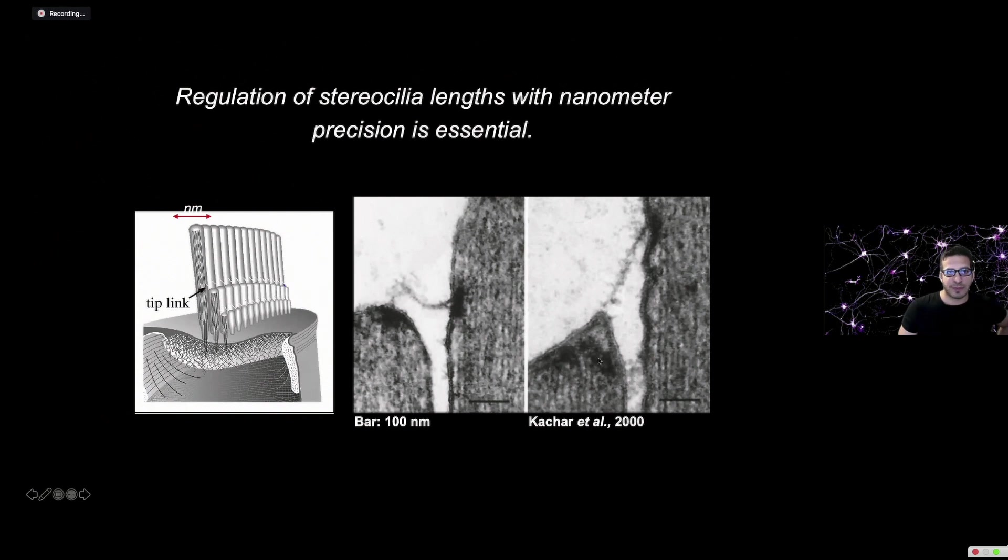Here's a different imaging approach called transmission electron microscopy, where we section the tissue into 70 nanometer sections. Using that approach, we can get much higher resolution, even atomic level resolution. This is two different cells. In one, the cell is stimulated, that string is stretched tight, stretching open the channels. In the other, it's relaxed. Nothing's stretched, nothing's open. If the shorter hair decided to grow taller, this would become relaxed. If this hair grew shorter, this would suddenly become tight. Biology has developed a method to tightly regulate this with nanometer precision. You can only see this with imaging.